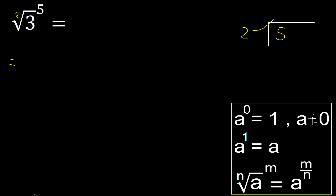2 — multiplied by which number is nearest to 5 but not greater? Multiplied by 3 is greater; multiplied by 2 is 4.